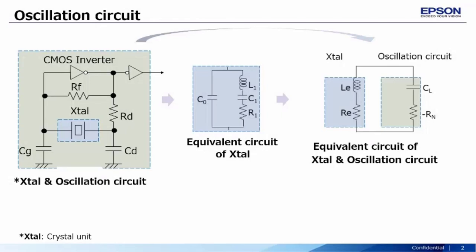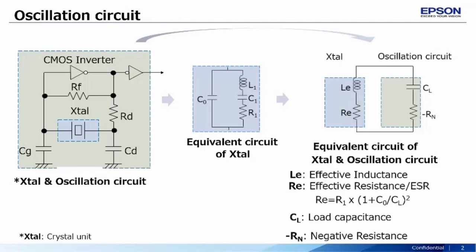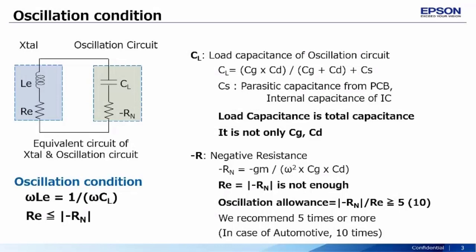The negative resistance is also called oscillation allowance, and it is listed as a negative value. Let us look at the factors that could possibly affect the oscillation conditions.